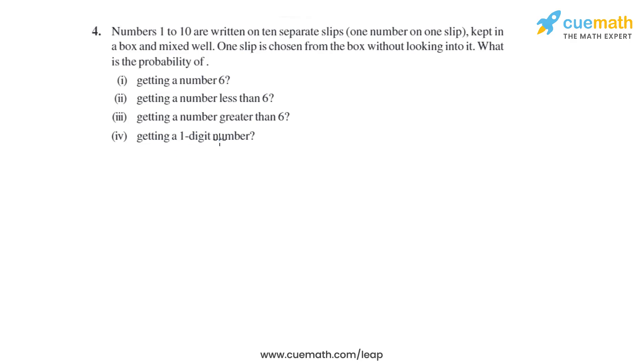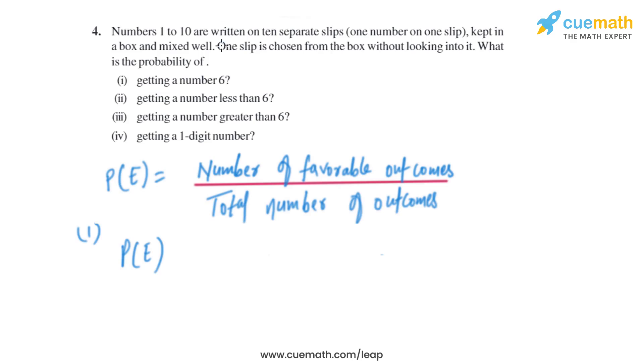As we know, the probability of an event to happen is basically the number of favorable outcomes divided by total number of outcomes. So let's start with the first part: getting a number 6.